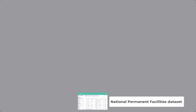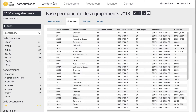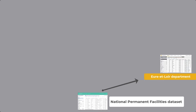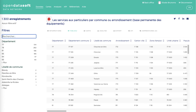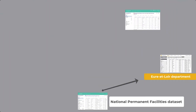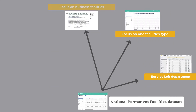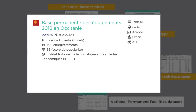This data is therefore the primary data source for many other datasets published on other portals. The French department of Heureloir has filtered the Facilities dataset to only display the facilities within its administrative territory. On the other end, the Île-de-France Région filtered the data on one single Facilities type.